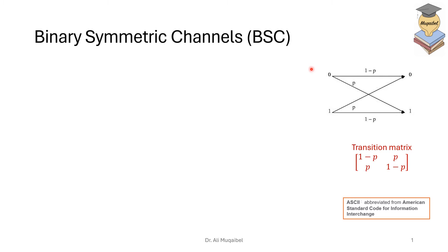A binary symmetric channel has a binary input with prior probabilities, and it goes through the channel. The channel output is zero or one, with a crossover probability of p. The probability of getting the correct answer is one minus p. Going from zero is just like going from one, so we have p, p and one minus p, one minus p — giving us a symmetric channel because sending zero is just like sending one.